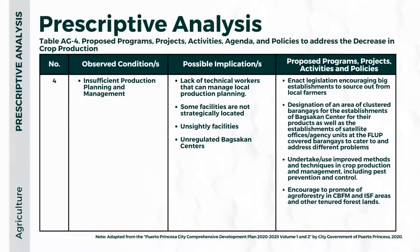For the final observed condition — insufficient production planning and management — the LGU must enact legislation encouraging big establishments to source from local farmers. The LGU should designate areas of clustered barangays for the establishment of Bagsak Centers for their products, as well as satellite agency units at the forest land use plan covered barangays to address different problems. The LGU should also undertake improved methods and techniques in crop production and management, including pest prevention and control, and encourage agroforestry in CBFM and ISF areas and other tenured forest lands.